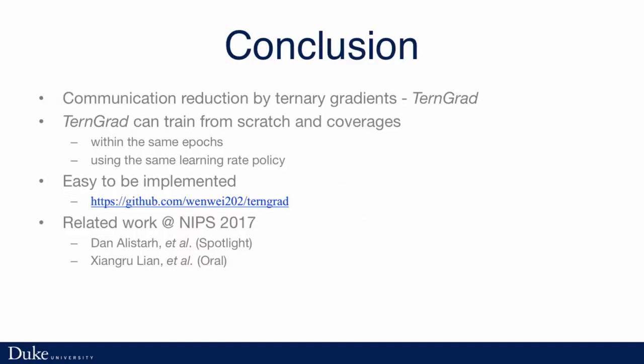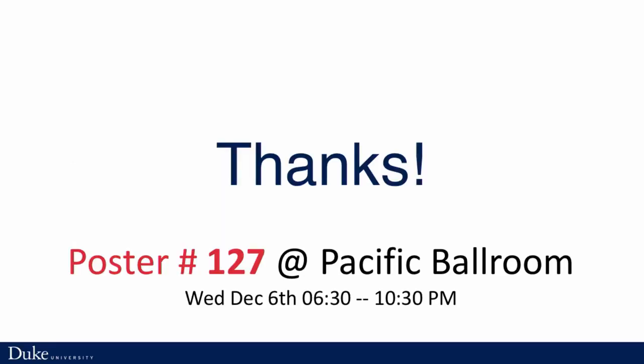Conclusion. We propose TernGrad to reduce the communication in distributed training systems to speed up training. TernGrad can train from scratch and converges within the same epochs using the same learning rate policy, and it's very easy to implement. Our source code is online. There is also some great related work at NIPS here — Dan proposed QSGD which solves similar problems. If you have more questions, you may come to our poster. Thank you.